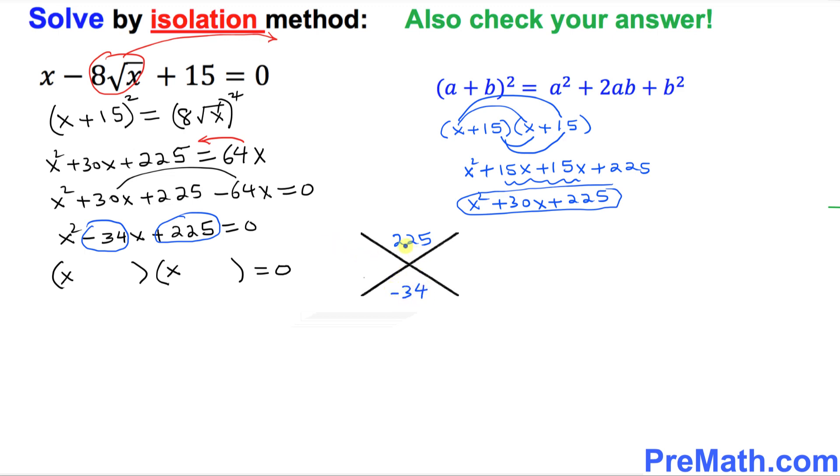Let's find the possible factors of 225. So the possible factor is going to be 9 times 25. I'm going to put down 9 times 25 is going to give you 225. 9 and 25, of course, is going to give you 34. Only thing is we need to fix the sign.